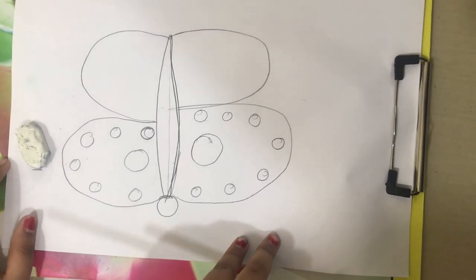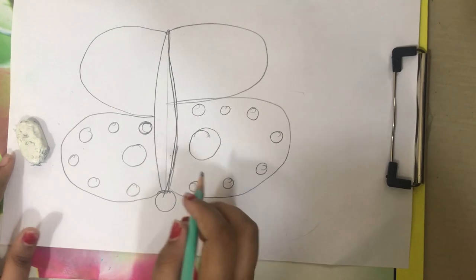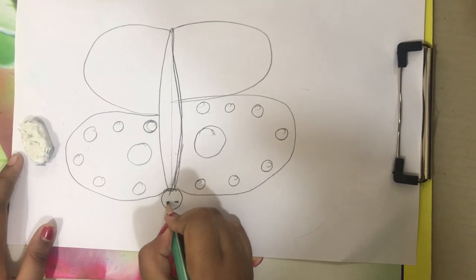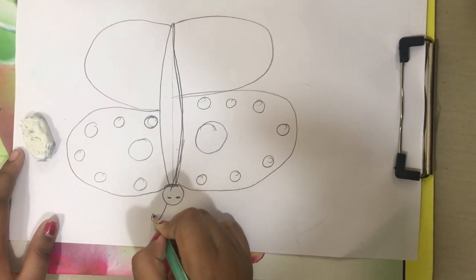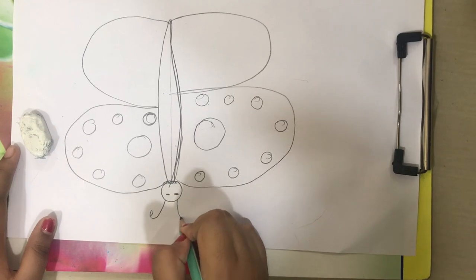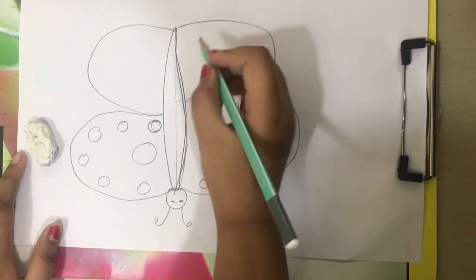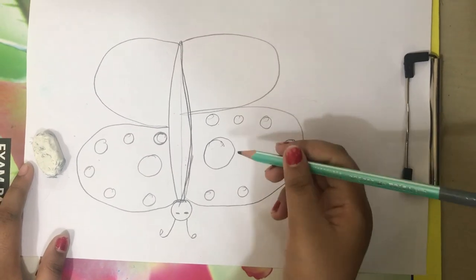Now we have to go to step 5. Step 5, in this head we have to draw the eyes and then the ears. Now on top, we have to draw the circles like these.